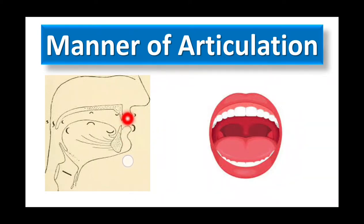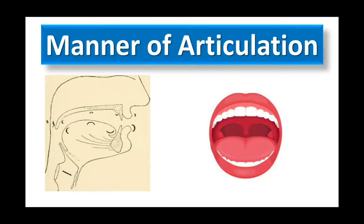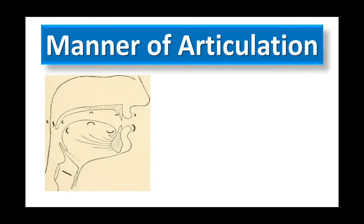The organs of speech include the lower lip, upper lip, lower teeth, upper teeth, various parts of the tongue, hard palate, soft palate, and so on. Manner of articulation describes how these organs of speech interact with each other — how closely they interact — to create a particular sound.